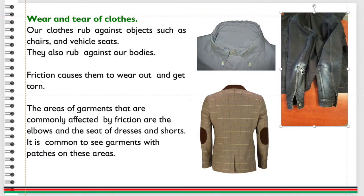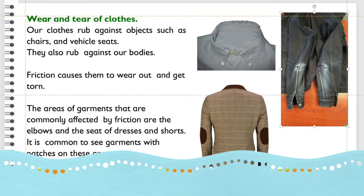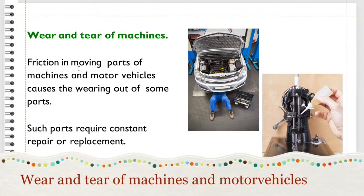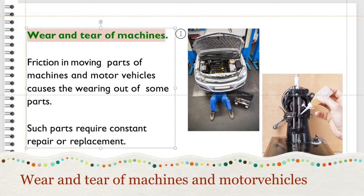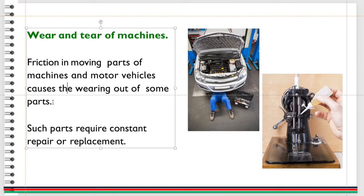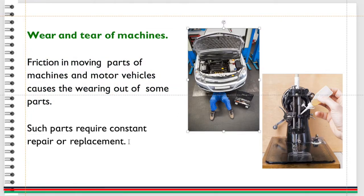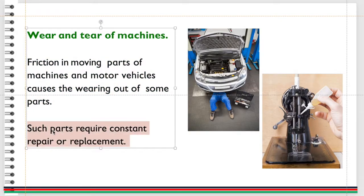It is common to see garments with patches on these areas. Wear and tear of machines: friction in moving parts of machines and motor vehicles causes the wearing out of some parts. Such parts require constant repair or replacement.